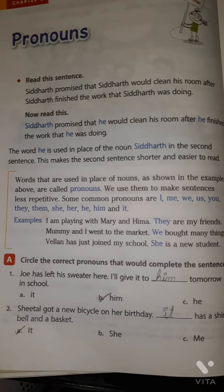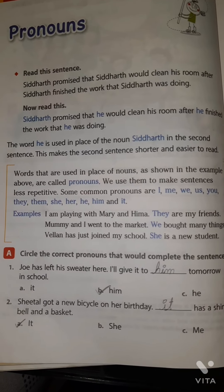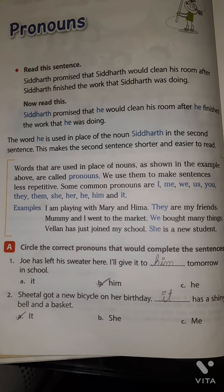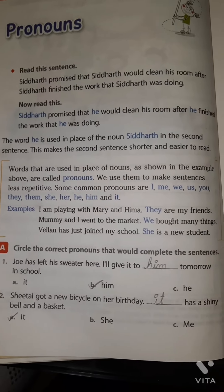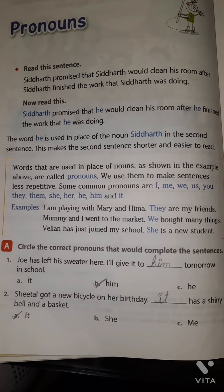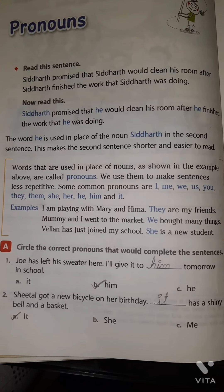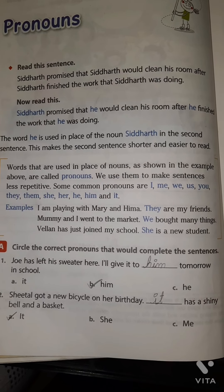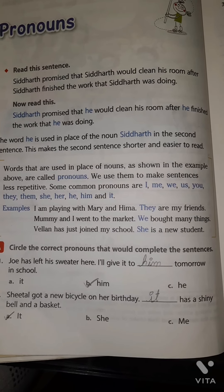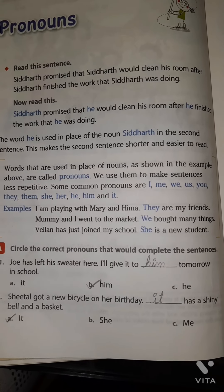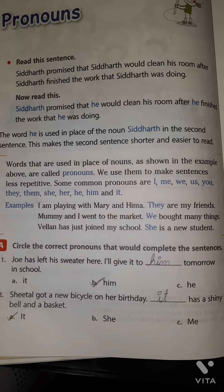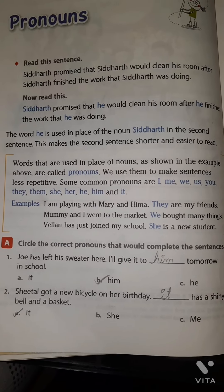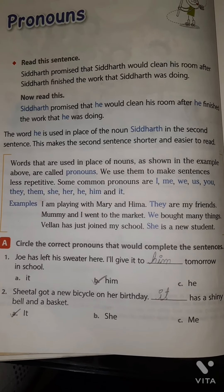These are the common pronouns. For example: 'I am playing with Mary and Hima' — here 'I' replaces a name or noun. 'Mommy and I went to the market and we bought new things' — we have two people: mommy and I, so we use 'we.' 'Valen has joined my school so she is my new student' — we use 'she' and 'her' for her name.